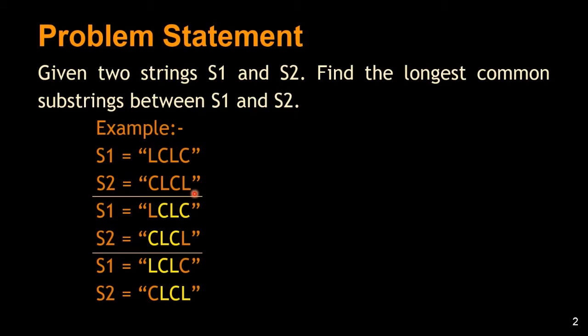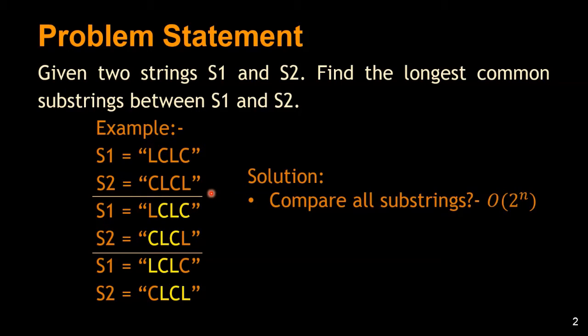Both 'clc' and 'lcl' are of length 3. The straightforward approach would be to compute all substrings of a given string starting from an empty substring, which gives 2 power n substrings. The comparison of all strings between two strings is intractable and exponential, so there should be a better way to do this.